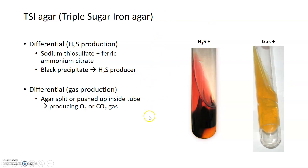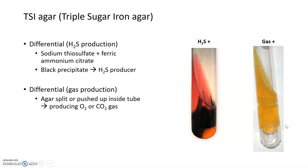Finally, TSI can also differentiate based on gas production. Gas-positive organisms sometimes produce CO2 gas that can crack through the agar, or produce enough gas to actually move the entire slant up the tube and create a bubble at the bottom. In this way, TSI can differentiate between gas producers and bacteria that don't produce gas.